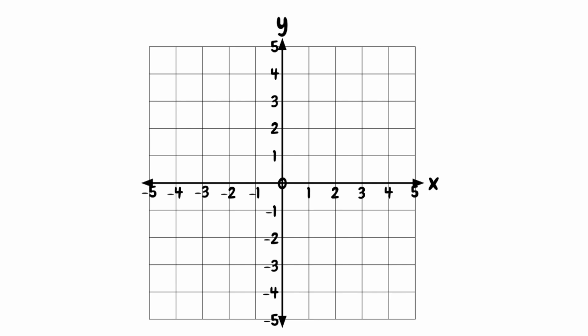Take a look at these first two examples for points A and B. When we write our coordinates, we write them in a bracket with our x position first and then our y position. To find our x position of point A, we start from our point and see what number it's in line with on the x-axis. By going from our point down to the x-axis, we can see that point A has an x-coordinate of 3, as that's what it lines up with on the x-axis.